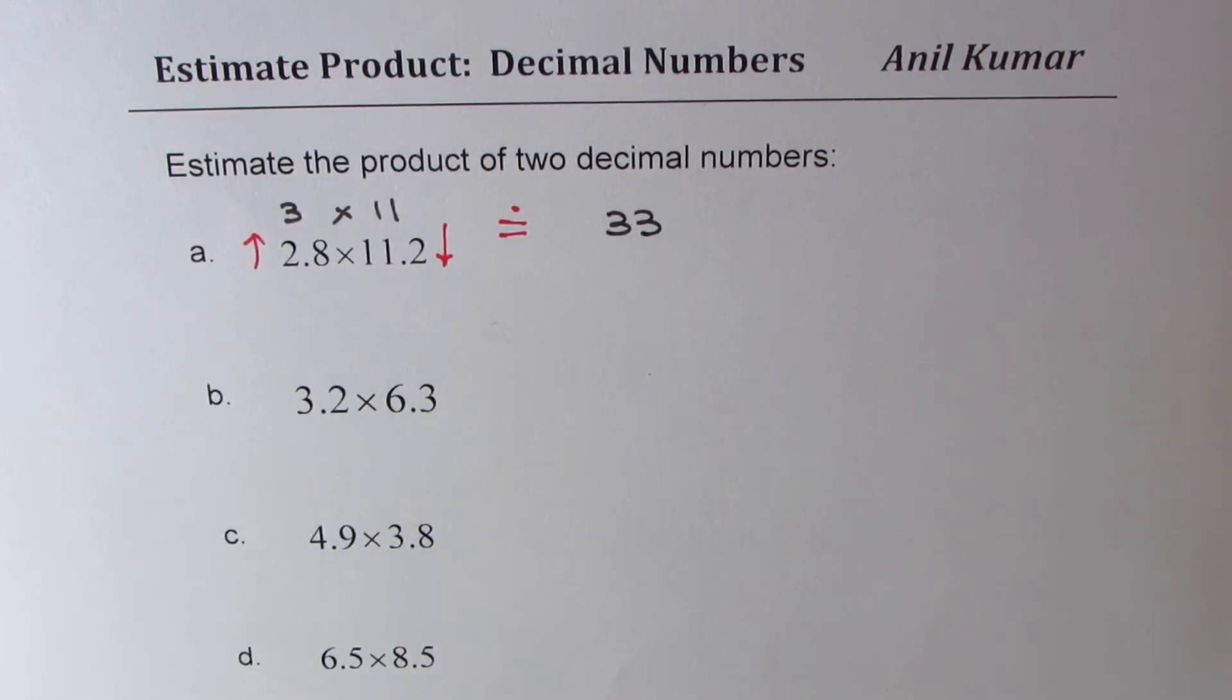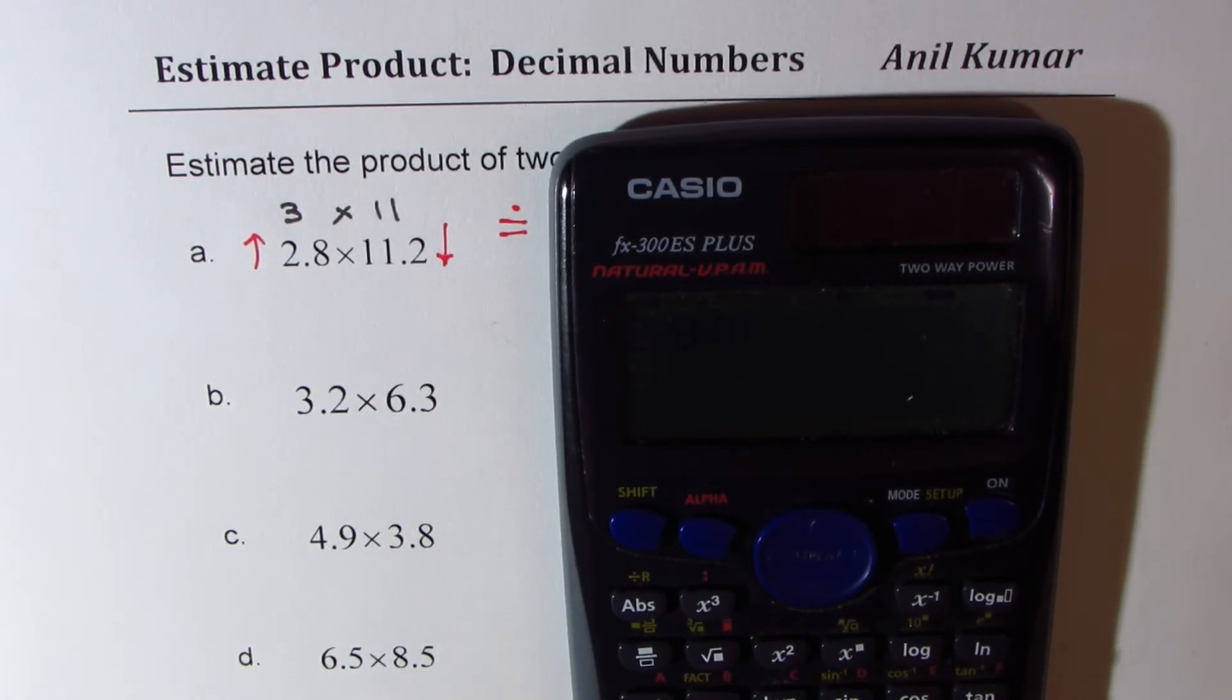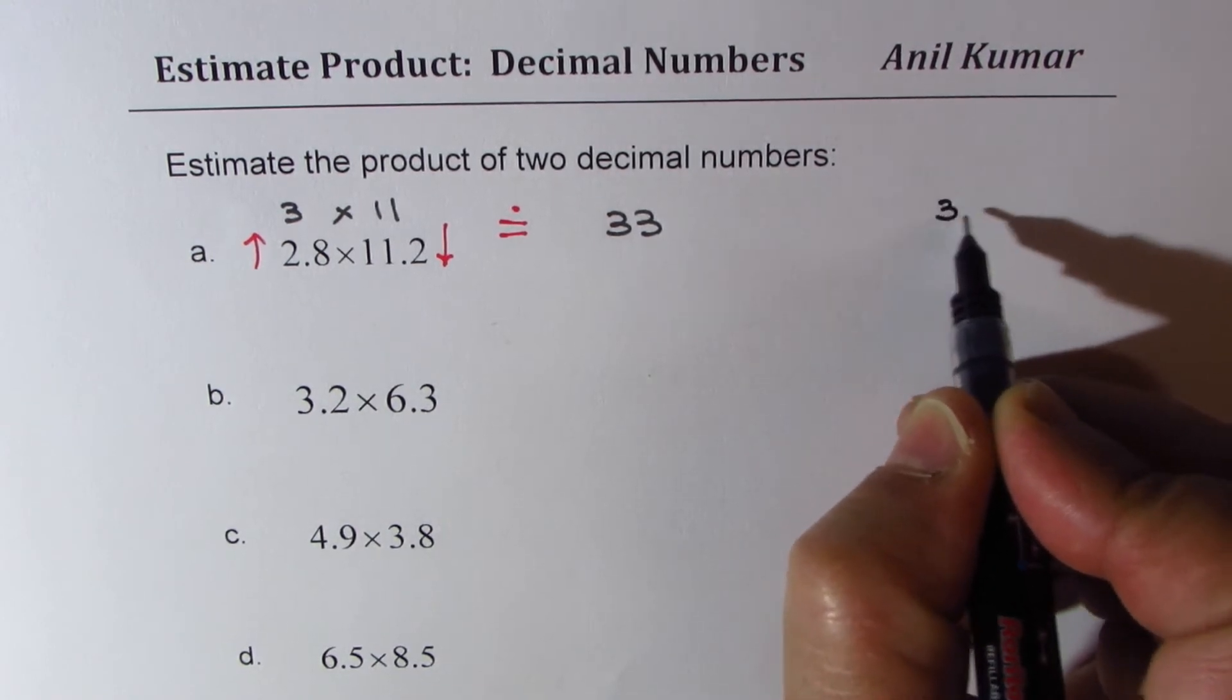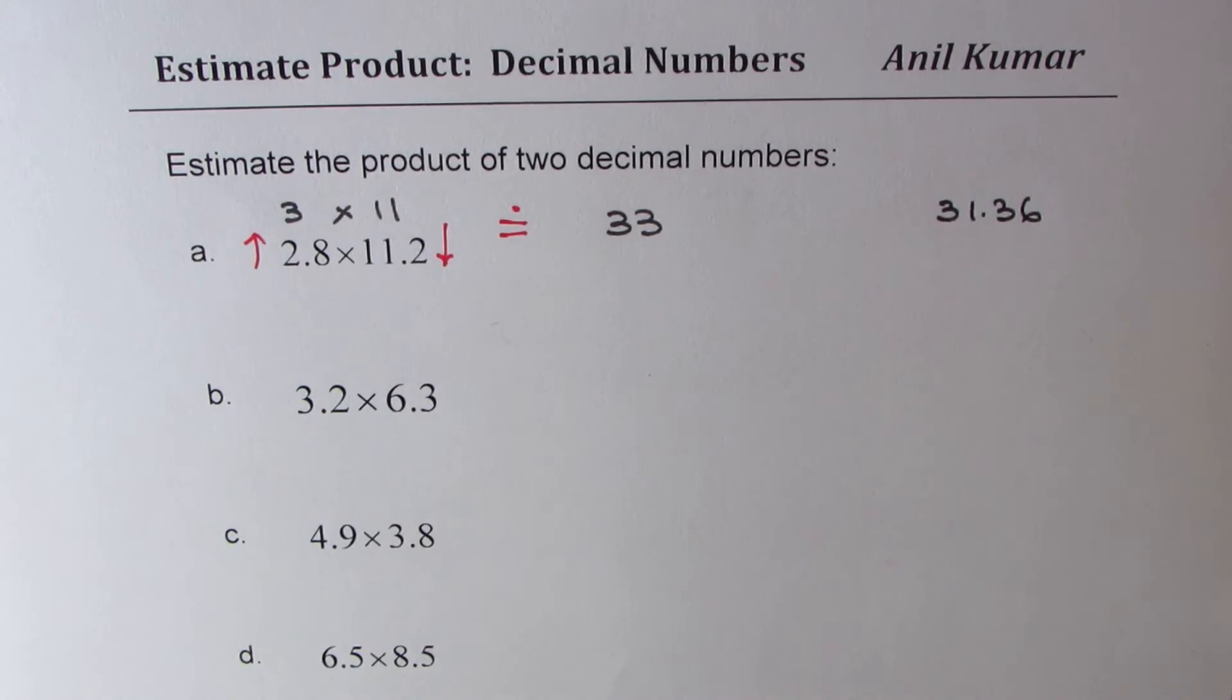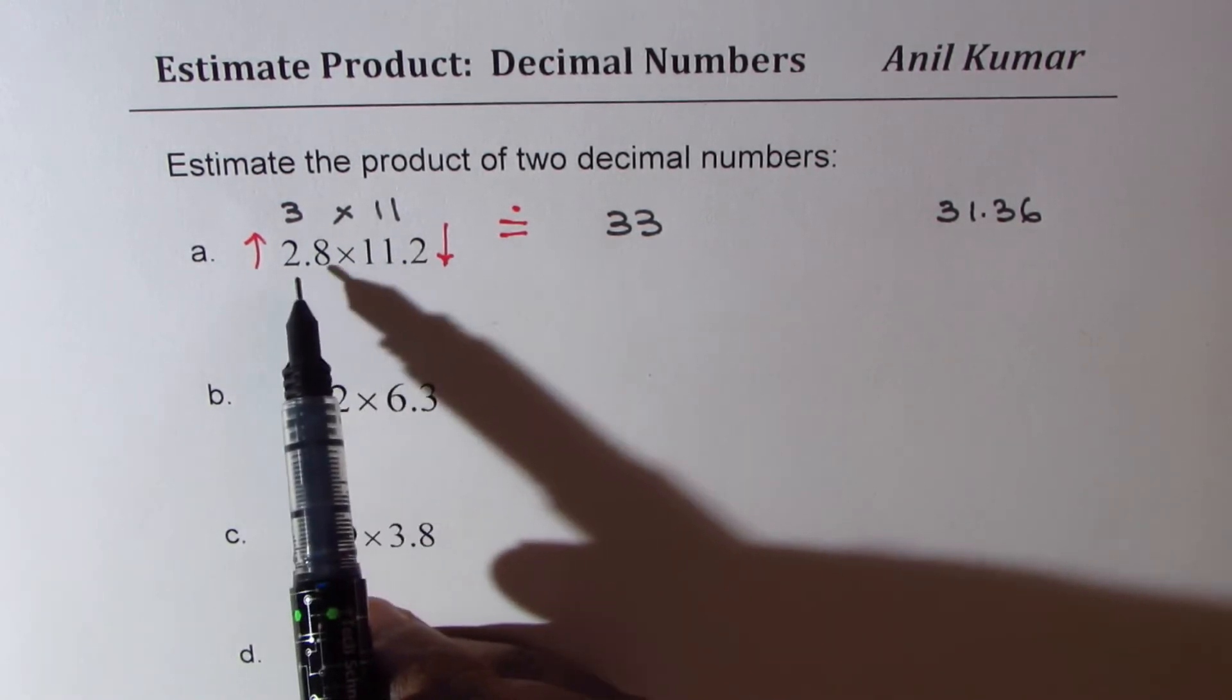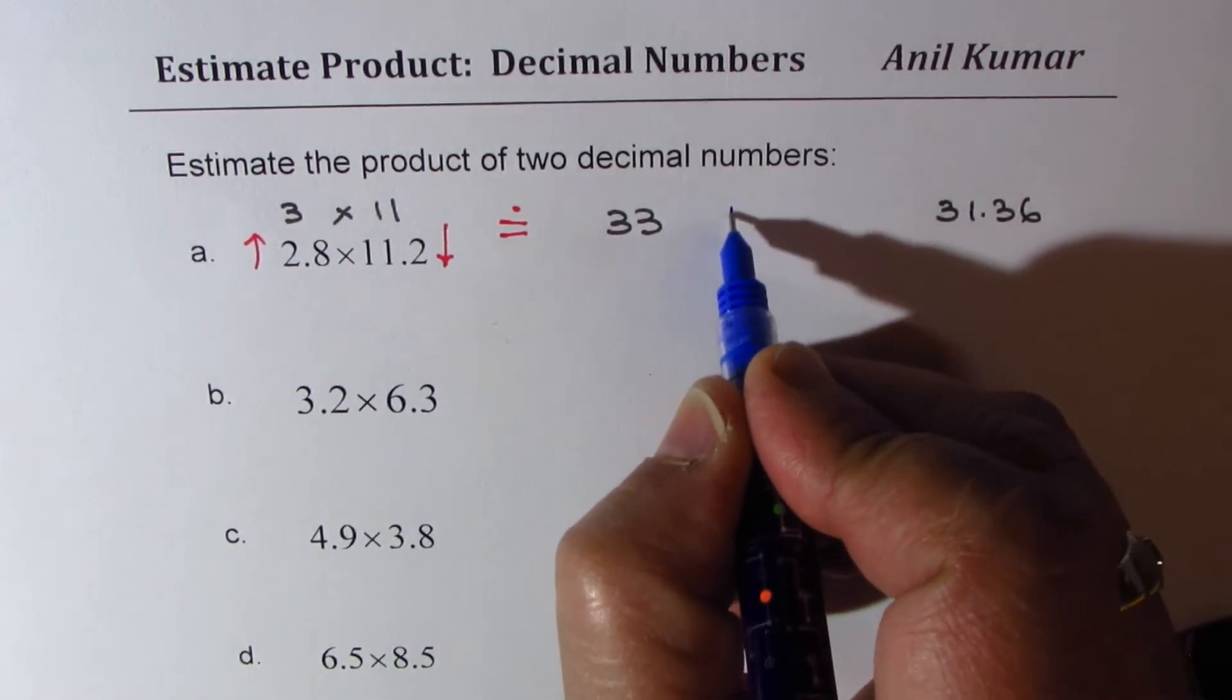Let us check this result. We have 2.8 times 11.2. It does give in decimals 31.36, which is fairly accurate. So it is not a bad estimate at all. Now that helps since one is being rounded higher, the other one lower. You could just estimate one number. Rounding helps. So in this, we just did this strategy to round.